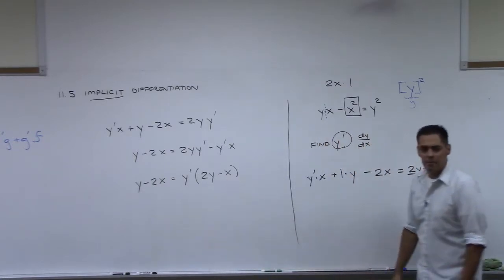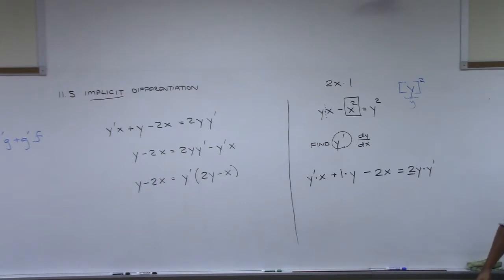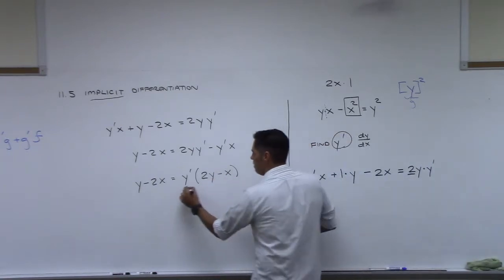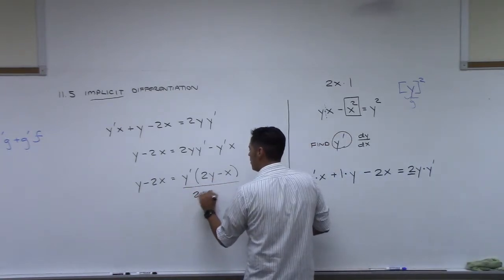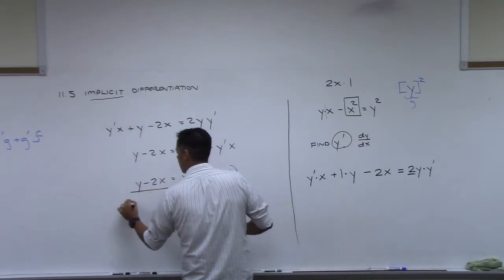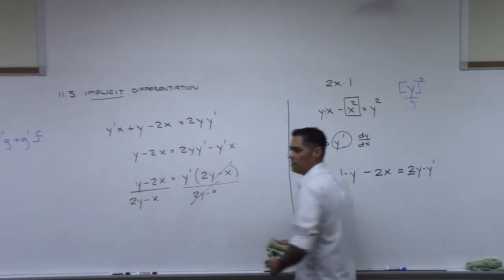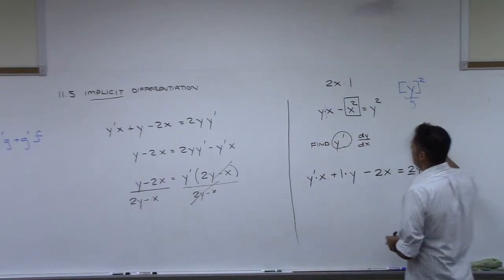So I pull a y prime out of this and a y prime out of that, pull it out front, and this is what would be left. One final step to get y prime by itself. Divide this on this side, 2y minus x. Divide by 2y minus x. And these will cancel.